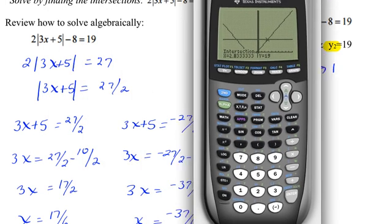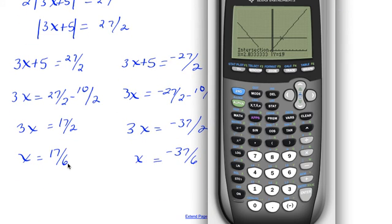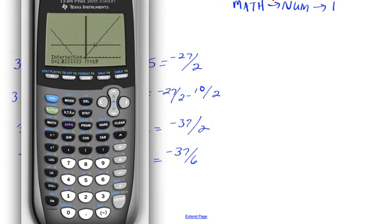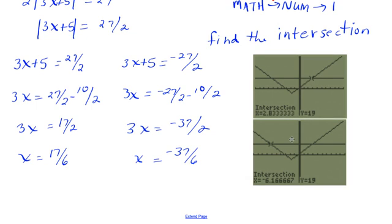So the last solution then. If we do that one, let's do second calculate again. The intersection, which is 5. And we just need to move this to the left for our curves. Get it over on this side. And we'll hit enter there. Enter there. And there is negative 6.16 repeating. And that corresponds to the negative 37 sixths. And I think I had some other stuff under here. Find the intersection. There's the picture of the graphs. And that will do it for this lesson.